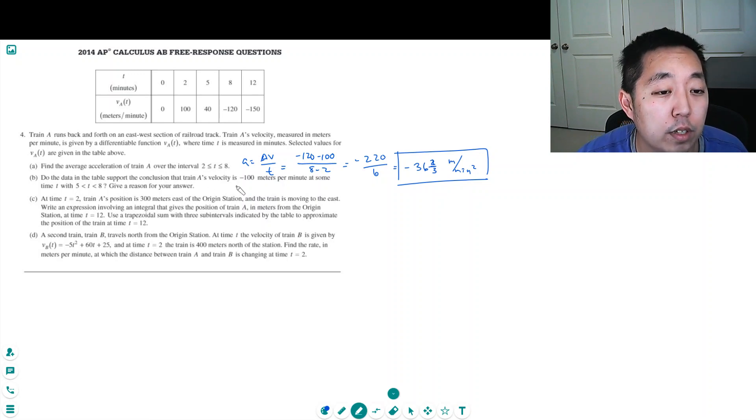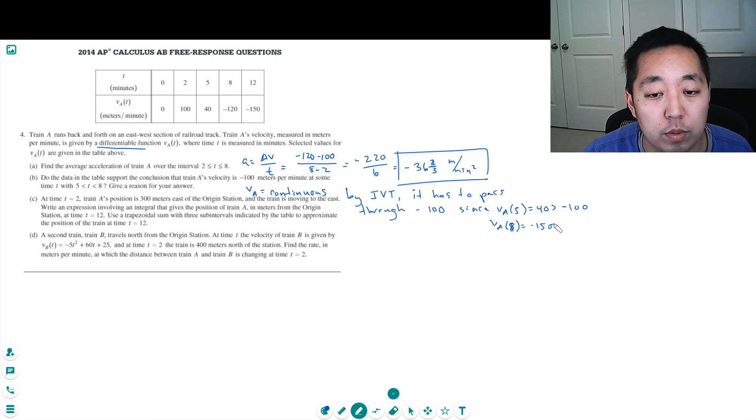Do the data in the table support the conclusion that train A's velocity is minus 100 meters per minute at some time between 5 and 8? Yes, by the intermediate value theorem. Because it's differentiable, that means VA is continuous, and by the intermediate value theorem, since VA at 5 equals 40, which is greater than minus 100, and VA at 8 equals minus 150, which is less than minus 100, it has to pass through minus 100 at some point.